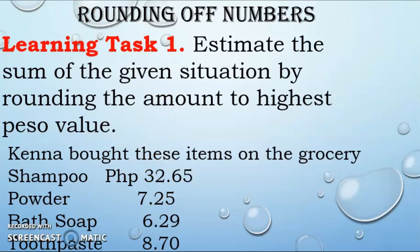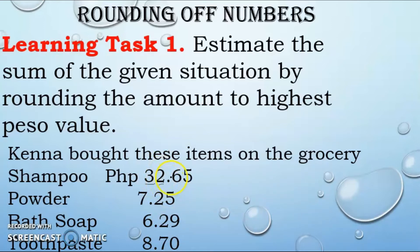For 32 pesos and 65 centavos, the highest peso value is 3, so that is our rounding place. The digit to its right is 2. Since 2 is less than 5, we do not change the 3 — it remains. Then the 2 becomes 0, giving us 30 pesos.